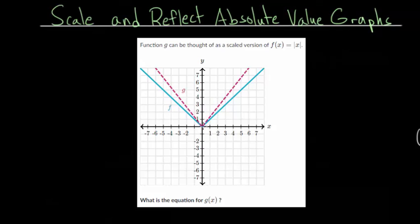We know that we're not shifting it, so we're not going to be adding or subtracting anything to the parent function because the vertex didn't move. It just became a different shape. So we need to figure out what we scaled it by.